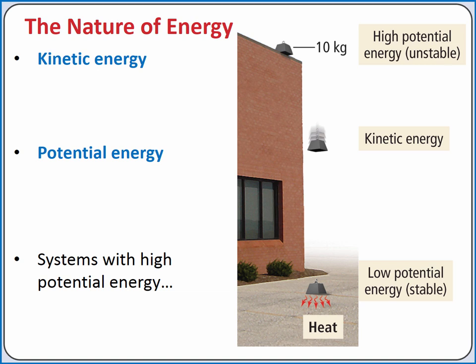If we brought a 10 kg mass to the top of a building, we would be giving it gravitational potential energy. Systems with high potential energy tend to change in ways to lower their potential energy. If it's pushed off the side of the building, the gravitational potential energy will be converted to kinetic energy as it falls. When it hits the ground, that kinetic energy will be converted to heat and sound and will be dissipated in the surroundings.